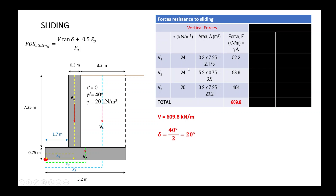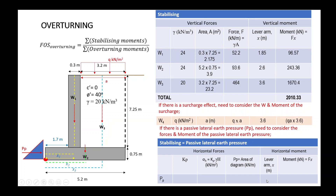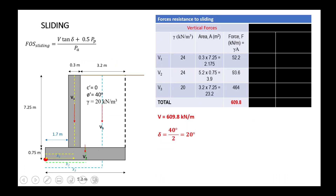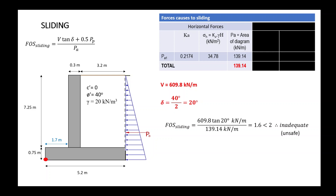Looking at the force column, we have forces due to the retaining wall and the backfill material. We also need to calculate the passive pressure component, multiplied by 0.5. This gives the forces that will stabilize against sliding, while the active pressure force causes the wall to slide.